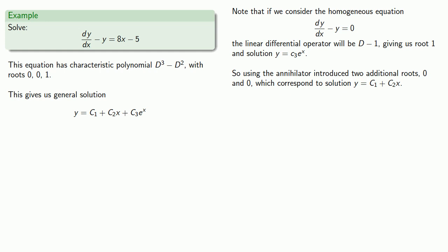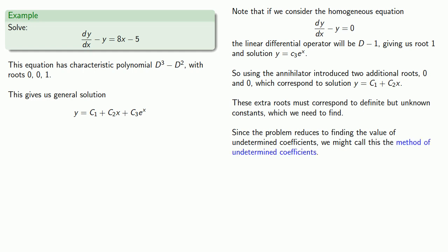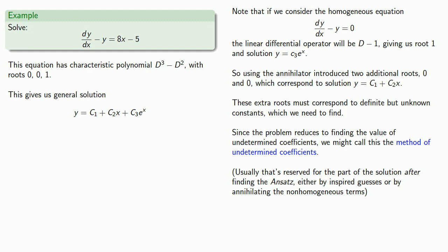These extra roots must correspond to definite but unknown constants, which we need to find. Since the problem reduces to finding the value of undetermined coefficients, we might call this, in a fit of inspired creativity, the method of undetermined coefficients. Yes, mathematicians are very bad at coming up with original names for things. Just as a side note, usually the method of undetermined coefficients is reserved for the part of the solution after finding the ansatz, either by an inspired guess or by annihilating the non-homogeneous term. In other words, somehow you get this general solution and then apply the method of undetermined coefficients.